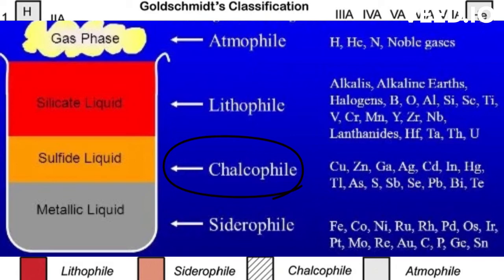Chalcophiles literally mean sulfur-loving elements. They include elements like silver and copper, which are easily combined with sulfur and other group 16 elements to form ionic compounds. The smaller amounts of sulfur were enough to help pull up the sulfur-loving elements like copper, silver, zinc, and cadmium, depositing them near the surface.